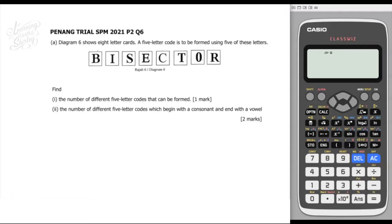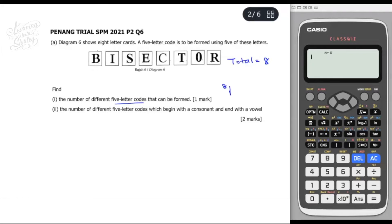Let's look at this question from Penang trial SPM 2021 paper 2 question 6. Diagram 6 shows 8 letter cards — B, I, S, E, C, T, O, R. A 5-letter code is to be formed using 5 of these letters. So total, there are 8 cards. Find the number of different 5-letter codes that can be formed. So from here, we have 8P5.